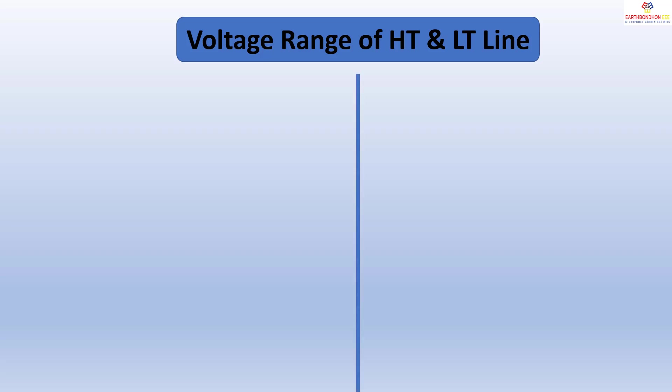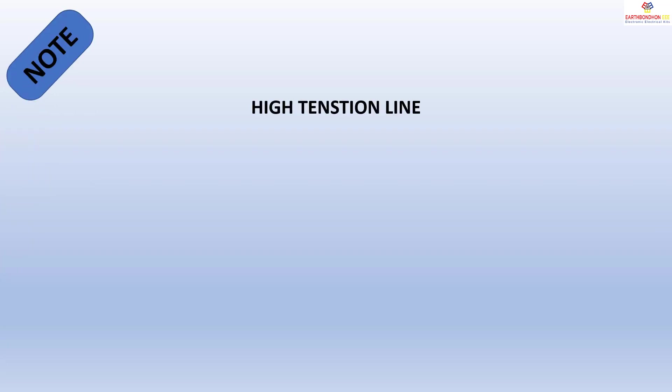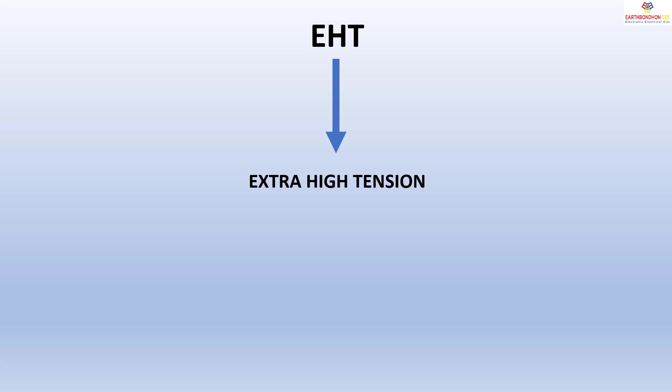Low tension line is less than 1 kV (1000 volts). In Bangladesh, LT supply line is 440 volts or 400 volts for three-phase connection, and 230 volts for single-phase connection. 11 kV equals 11,000 volts. Note: High tension line is up to 33 kV. Above 33 kV is extra high tension voltage grade.